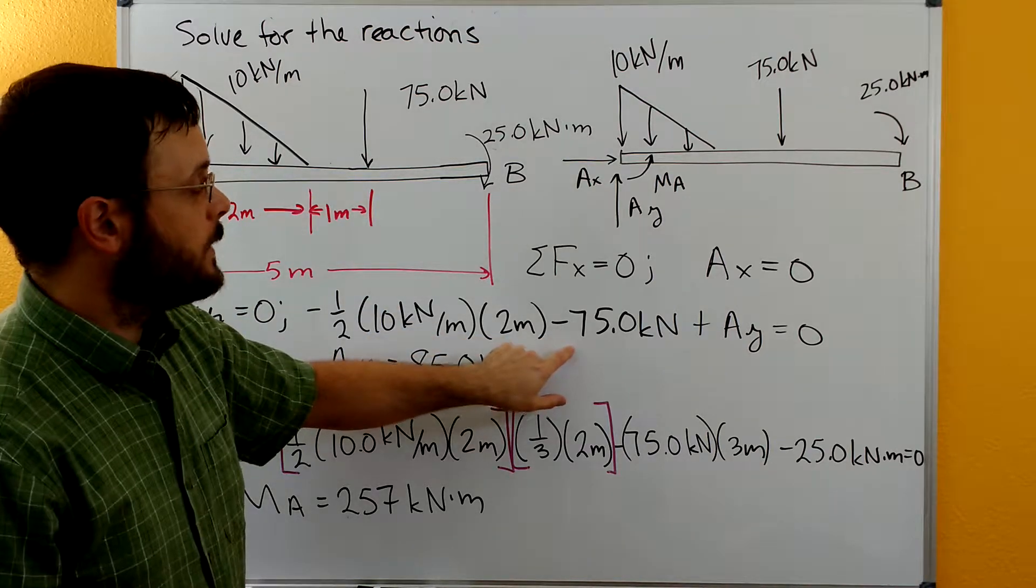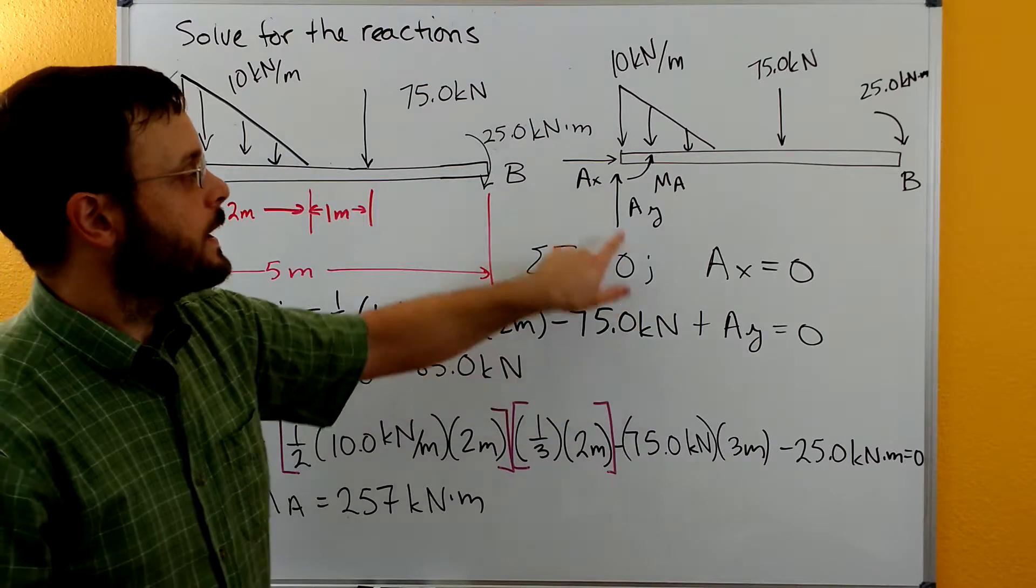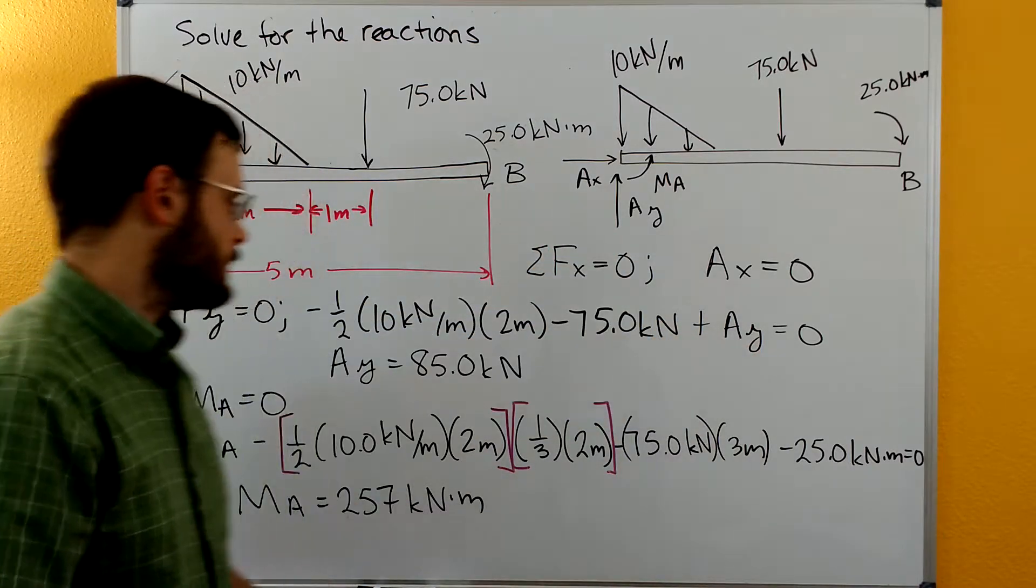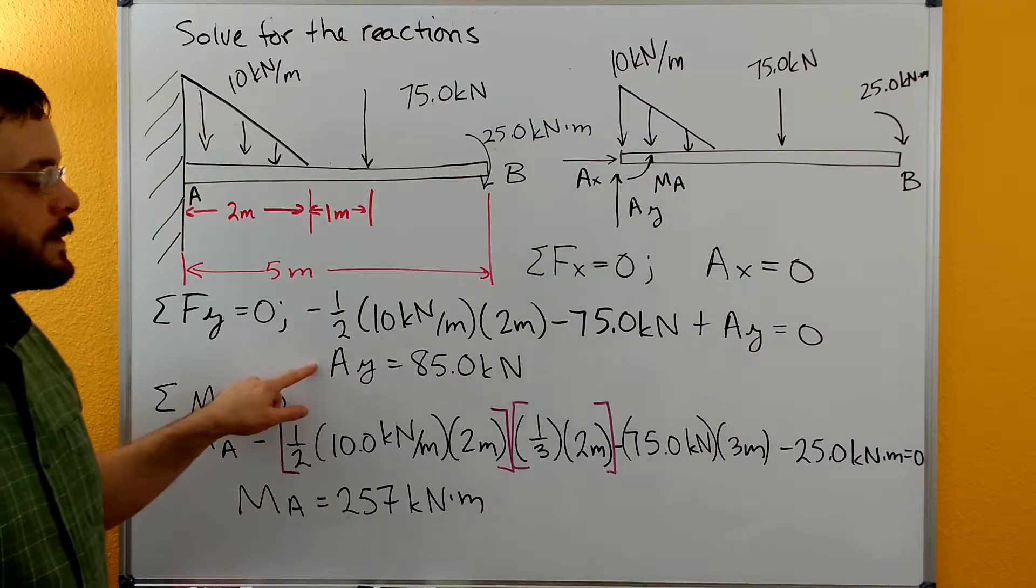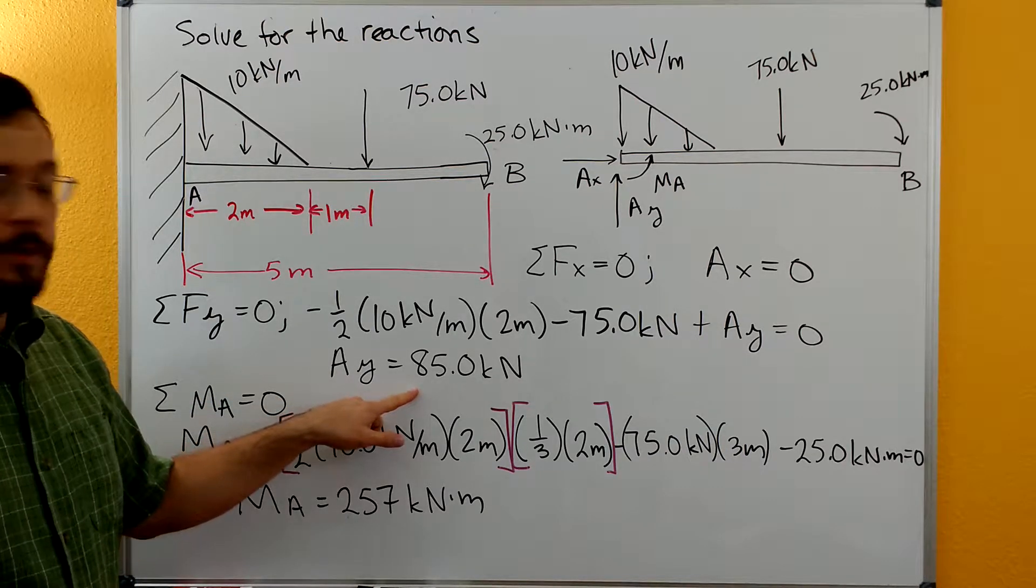And then we have minus the 75 kilonewton concentrated force, and then plus the AY is equal to zero. We can solve this equation. We just have the one unknown, and so we get AY is equal to 85 kilonewtons.